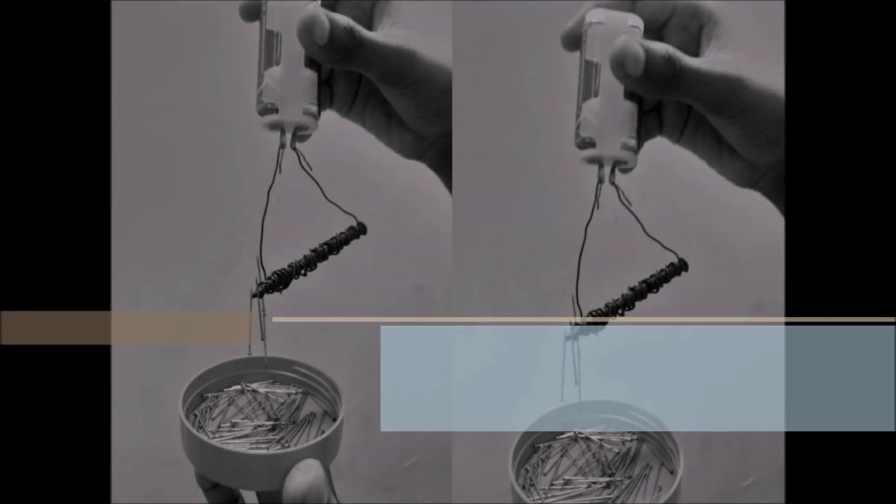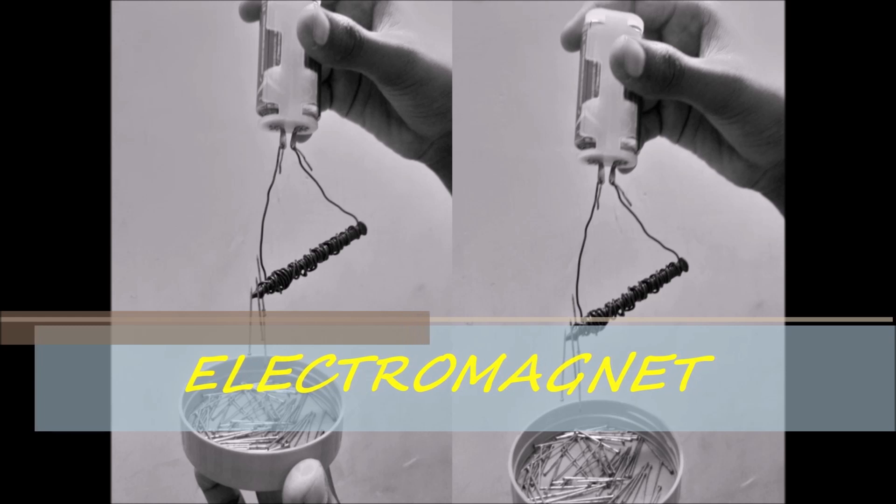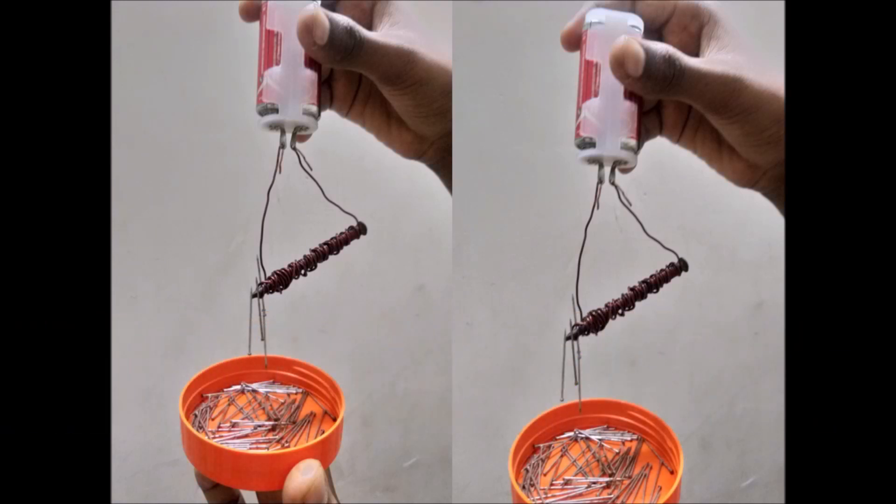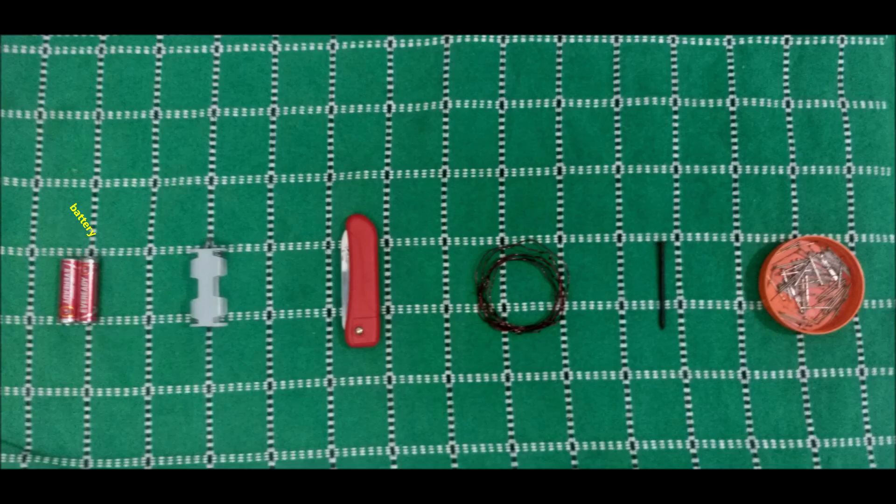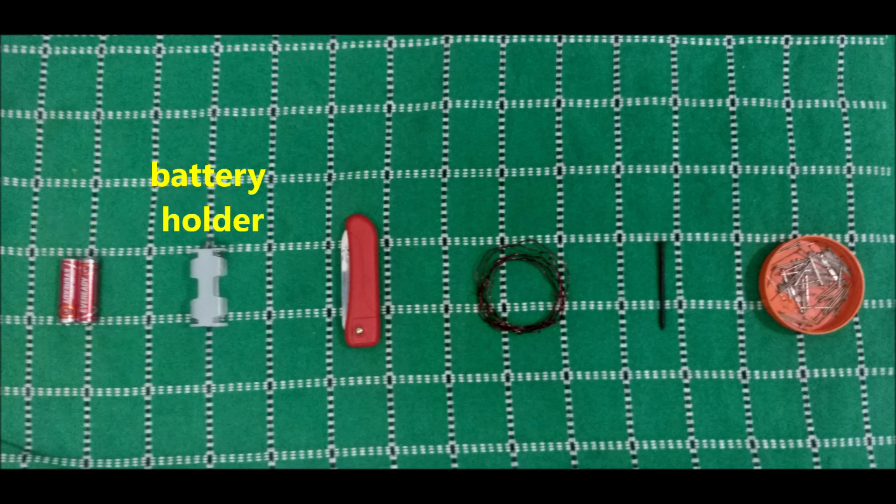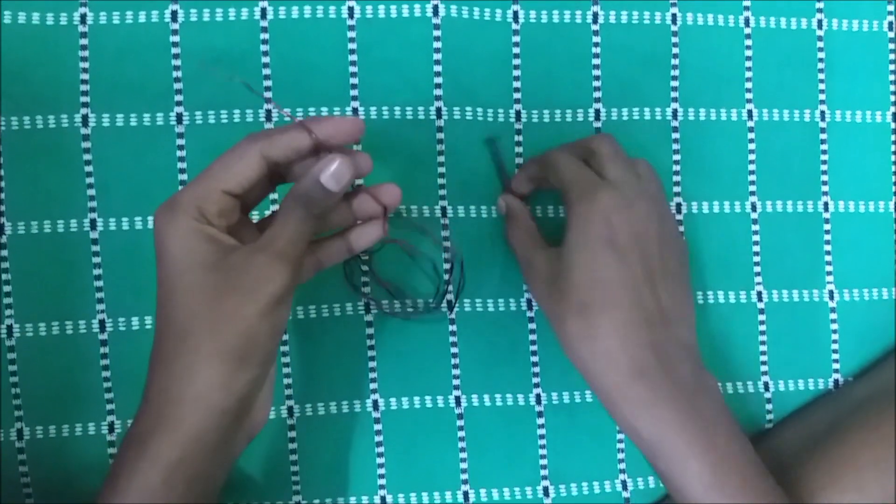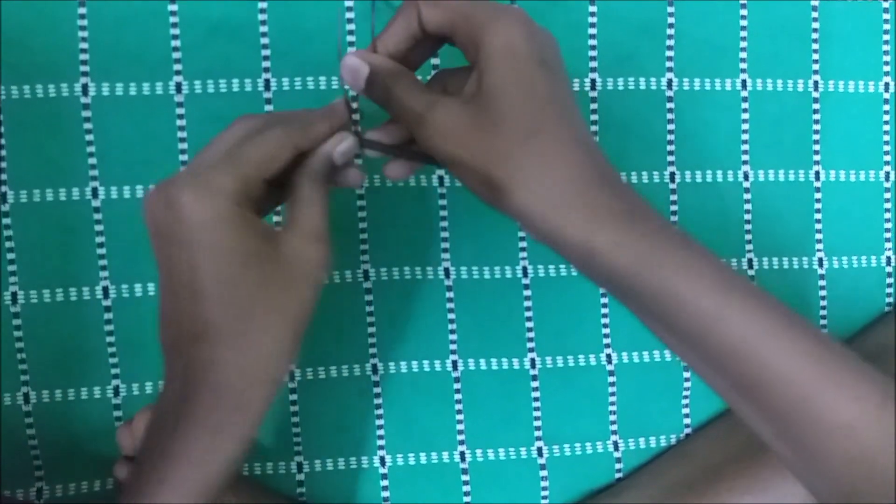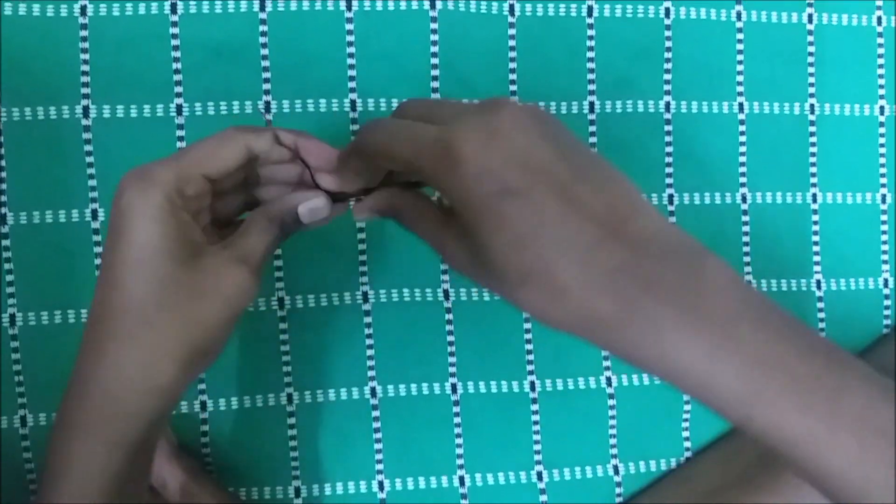Thank you so much for watching. Take the iron nail and wrap the copper wire around it and form a coil.